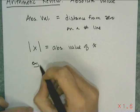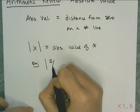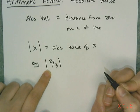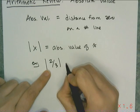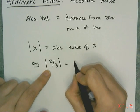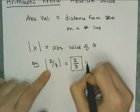So if I see this, I'm asking you to find the absolute value of 2/3, which is how far 2/3 is away from zero on a number line, or just plain old 2/3.